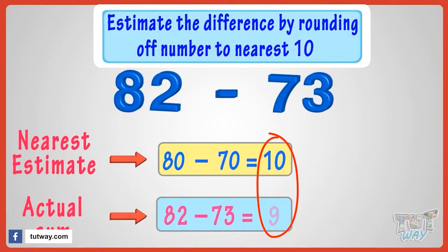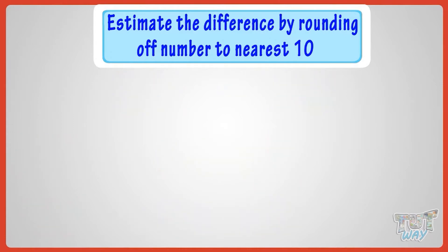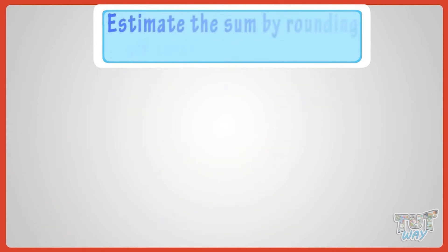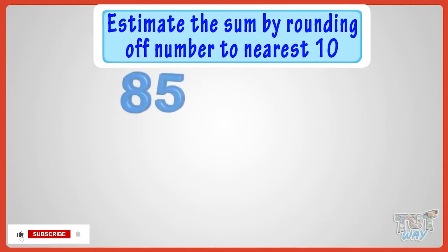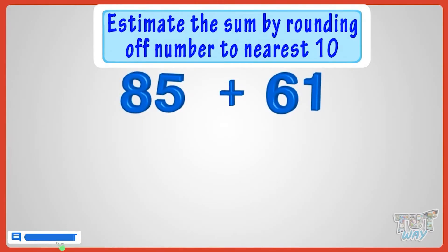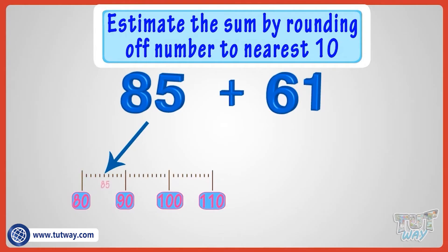Now let's take another example. We have to add 85 and 61. Here both the numbers are midway between two tens, so we will be rounding them off. Rounding off 85 to the nearest ten we get 90 as 85 is on the 5 mark.